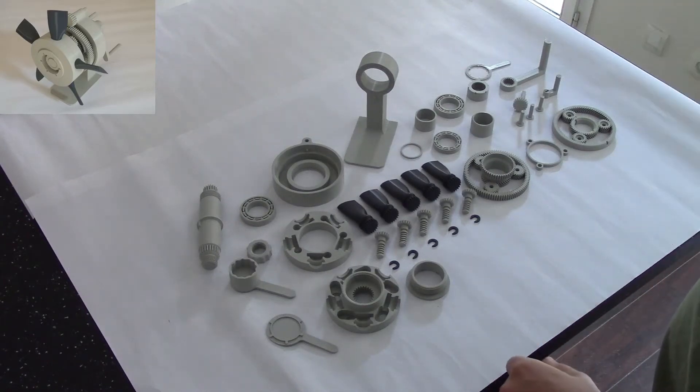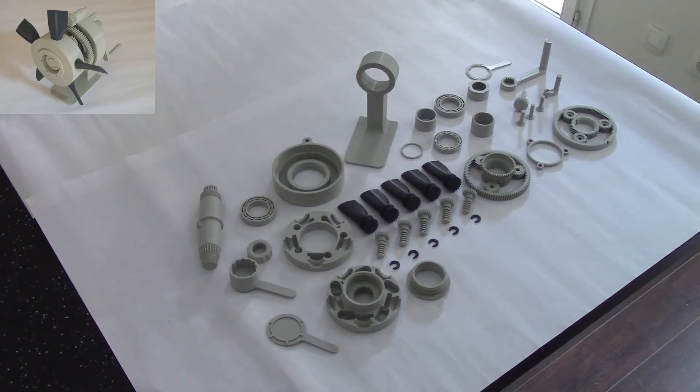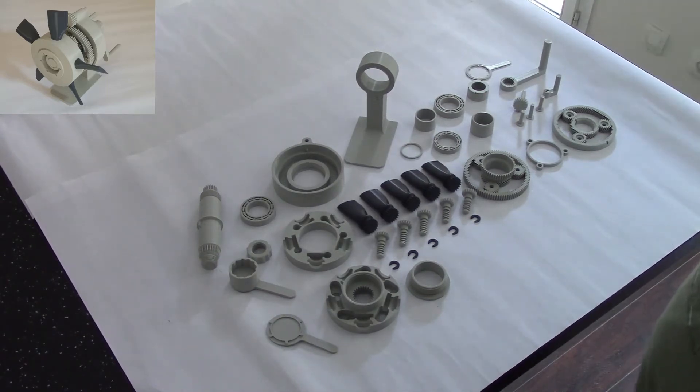I'm going to go through the assembly of the variable pitch propeller mechanism. I've got all the parts laid out here, and it can be assembled in different sub-assemblies. So we're going to start with the propeller sub-assembly.